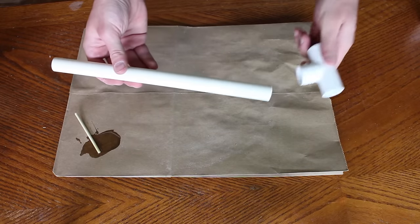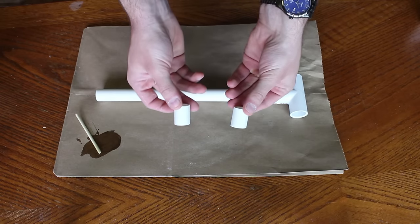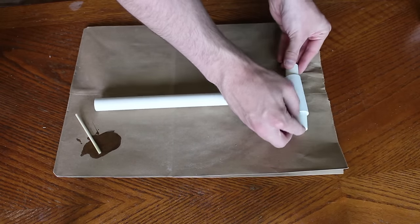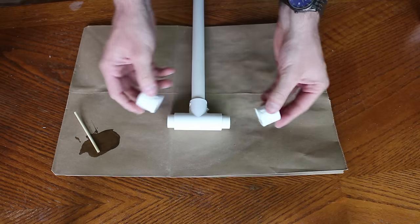We're going to take the 12 inch piece and put a tee on one end. Then we'll take the other 2 1 inch pieces and place those into the tee. Then cap off the ends.